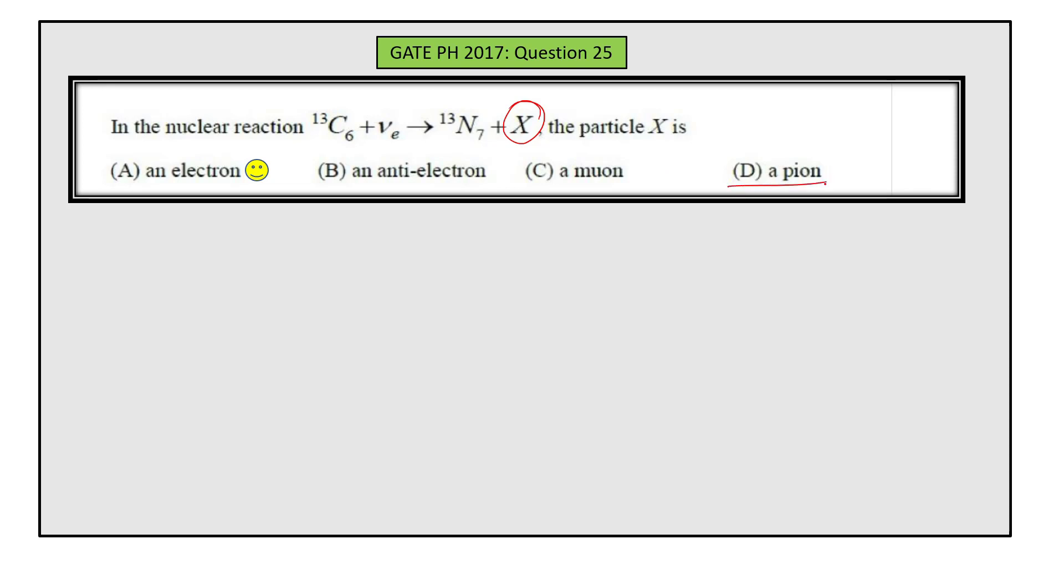One option is pion. If you see here, we have leptons: they are electron, muon, and tau, and their neutrinos.